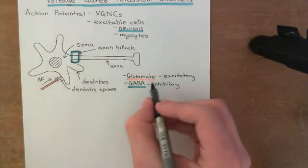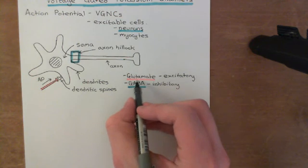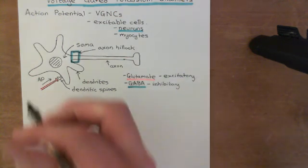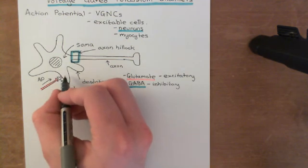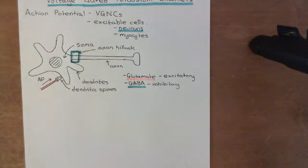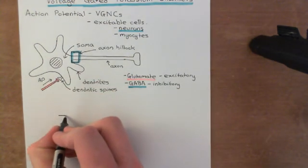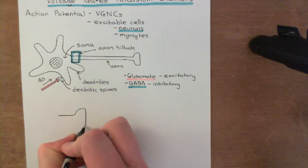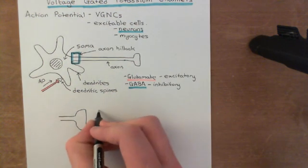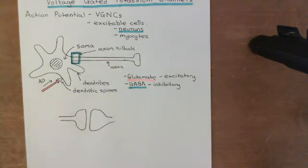Each neuron will either be GABAergic or glutamatergic — it's fixed. It will either be exciting or inhibiting this neuron. So how do glutamate and GABA actually cause these excitatory and inhibitory effects on the neuron's likelihood to fire an action potential? Basically, you have receptors on the postsynaptic membrane for glutamate or GABA. Unfortunately we're going to have to call it there for this video, and we'll continue this discussion in the next video.